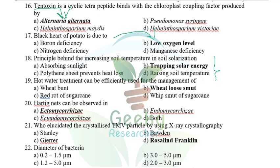The principle behind increasing soil temperature in soil solarization — Jacob Cotton is considered the father of soil solarization, recommended especially for soilborne pathogens. Options included absorption by polythene sheets, prevents heat loss, and raising soil temperature. I believe the answer is trapping of solar energy, though some colleagues say polythene sheets prevent heat loss — both are arguably correct. I went with trapping of solar energy.